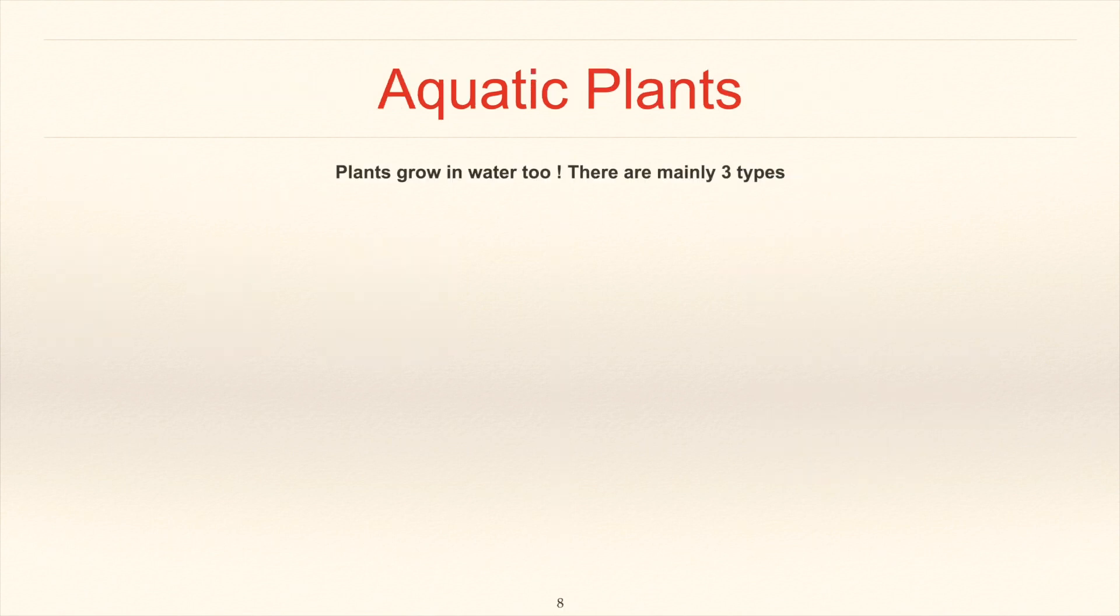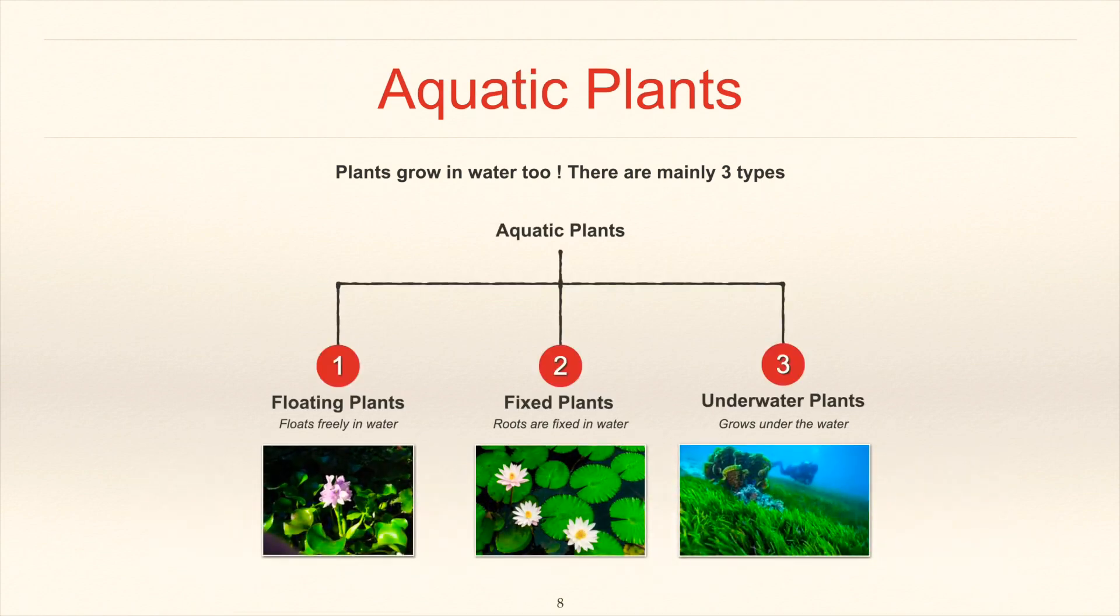Plants grow in water too. There are mainly three types of aquatic plants. They are floating plants that float freely in water. Fixed plants where the roots are fixed in water. And the third type is underwater plants where the plants will completely grow under the water.